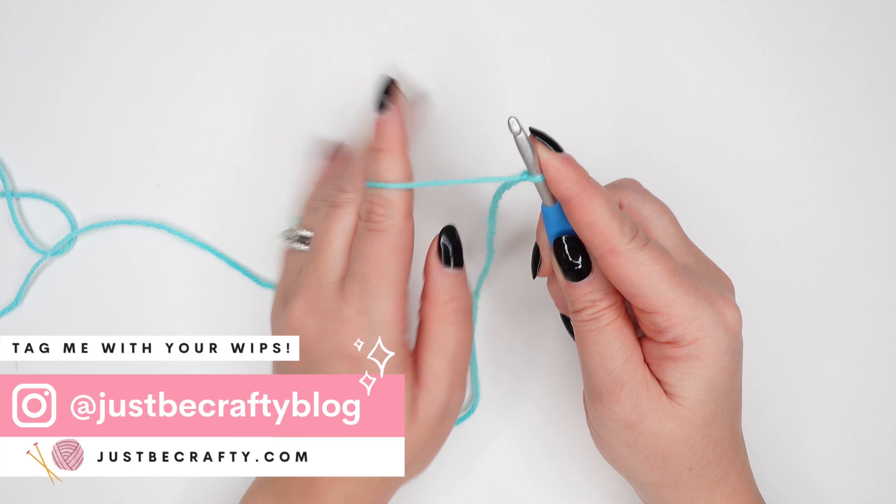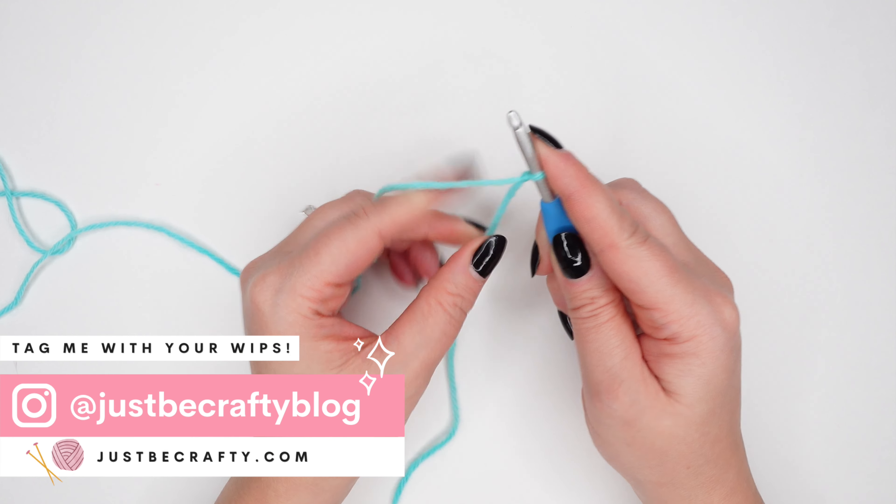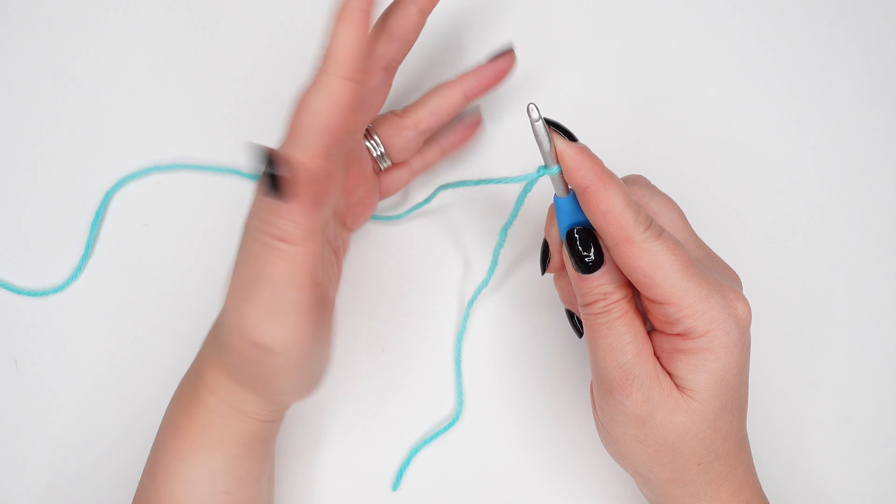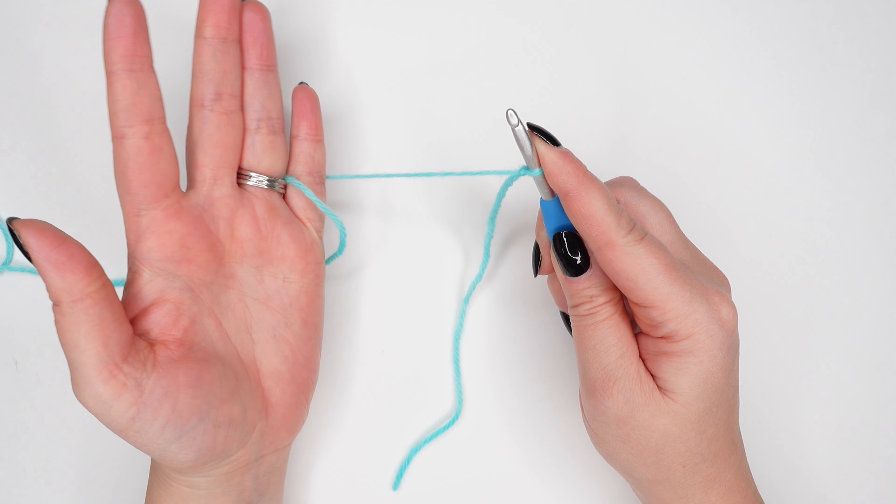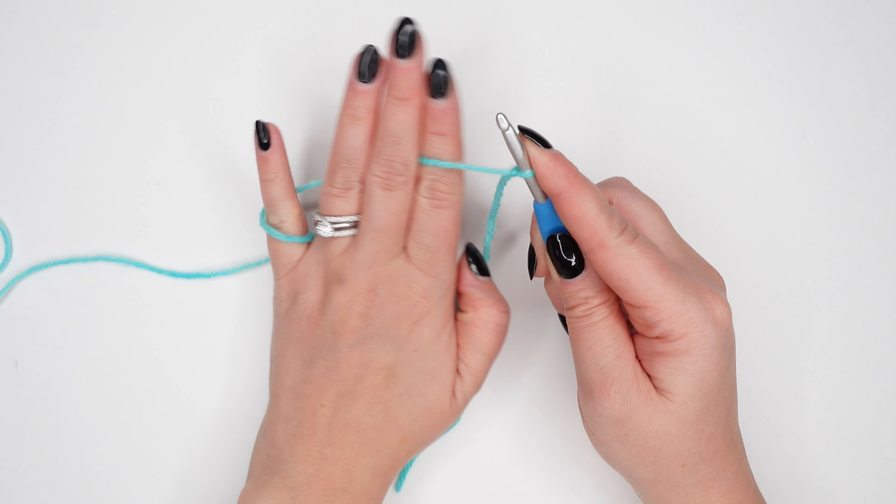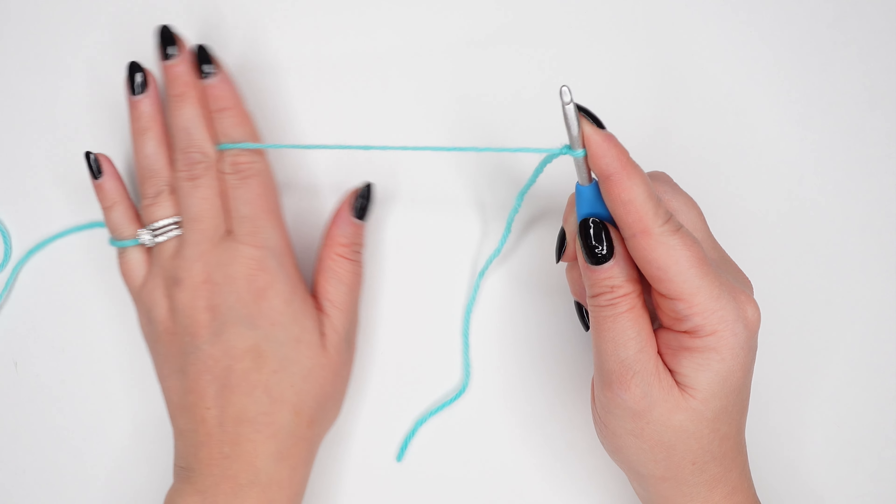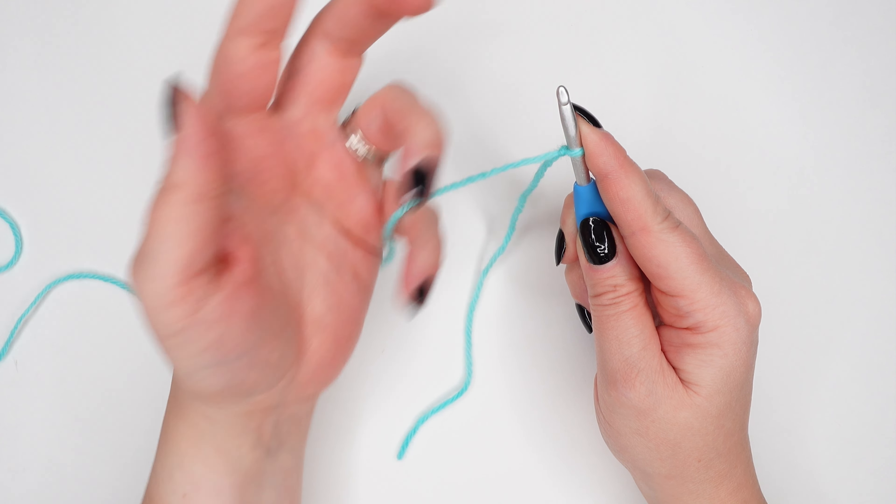Take your hands out of the yarn and let's do that again. Take your pinky and grab the yarn, flip your hand over so that the back of your hand faces up, and put your pointer finger under the yarn feeding to the hook.